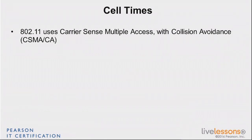802.11 doesn't like collisions. If you send a wave and anybody else at the same time sends a wave, basically nobody gets that wave, because these two waves get mixed together and we don't know who was sending what. So 802.11 uses a mechanism to avoid collisions as much as possible, and that system is called CSMA/CA — carrier sense multiple access with collision avoidance.